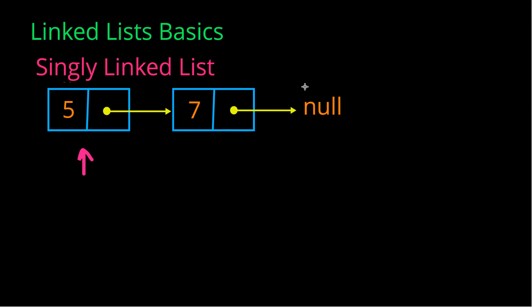It's important to note that there are a couple of different types of linked lists. The two most popular ones are singly and doubly linked lists. Singly linked lists are linked lists where every node only points to the next node and nothing else — hence, it is singly linked to another node.